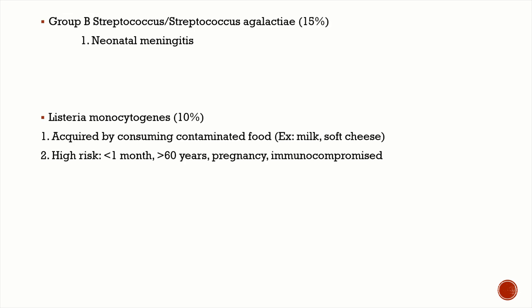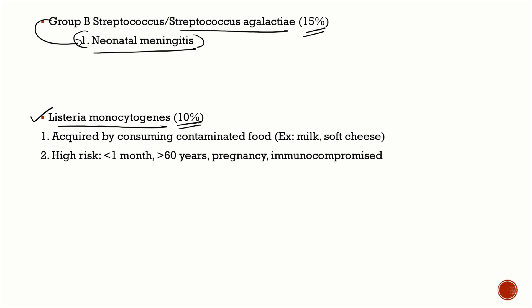Group B Streptococcus (Streptococcus agalactiae) accounts for 15% of meningitis and is a classic cause of neonatal meningitis, but is now also an important cause in adults. Listeria monocytogenes accounts for 10% of bacterial meningitis and is usually acquired by consuming contaminated food like milk and soft cheese.